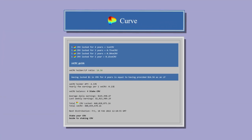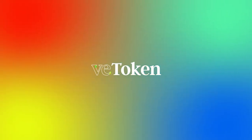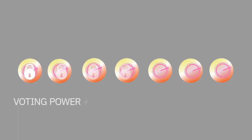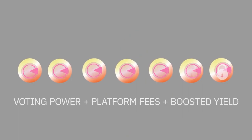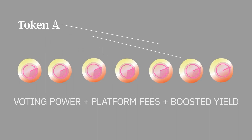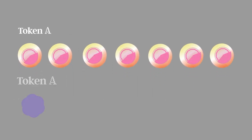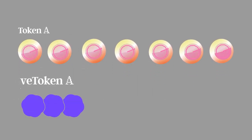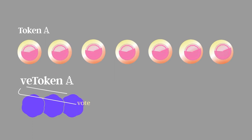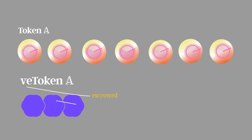First introduced by Curve Finance, the VE token model enables anyone that locks protocol tokens for a given duration to receive voting power, platform fees, and boosted yields when using the platform. In return for locking token A for a period of time, from one week up to four years, you receive VE token A, representing your vote escrowed tokens.